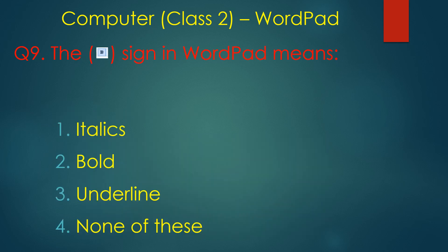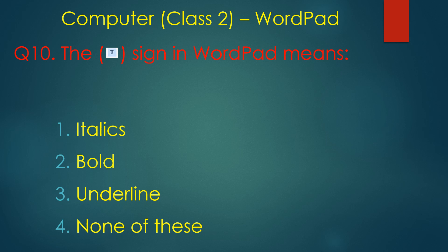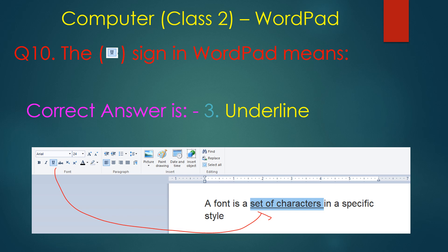The 'B' sign in WordPad means bold — bold is the correct answer. Select the text and click bold, and the text, characters, and paragraphs will be bold based on selection. The 'U' sign means underline — select the text, click underline, and it applies underline to the selected text.